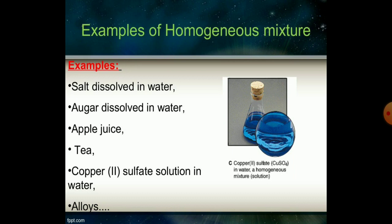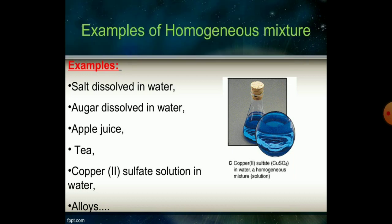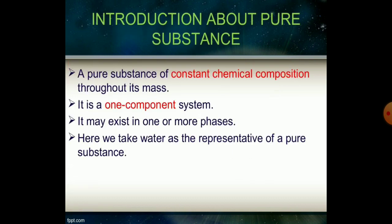Other examples of homogeneous mixtures include agar dissolved in water and apple juice. Tea is the best example of a homogeneous mixture of water, sugar, and milk. Copper sulfate solution in water and various alloy materials are also examples of such substances.